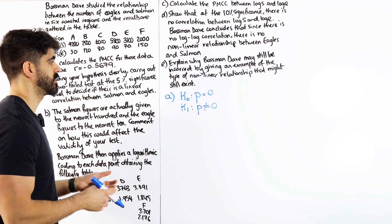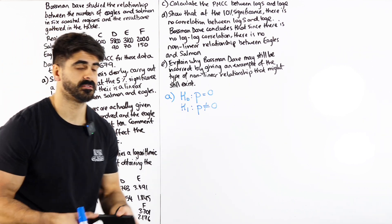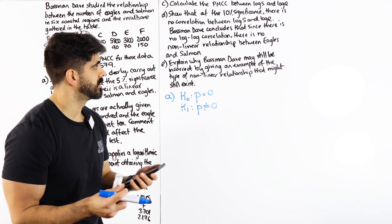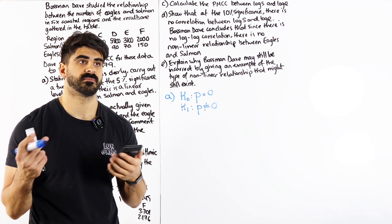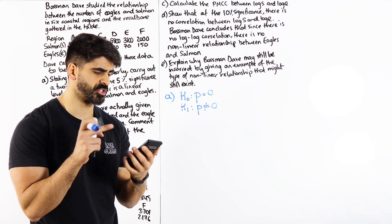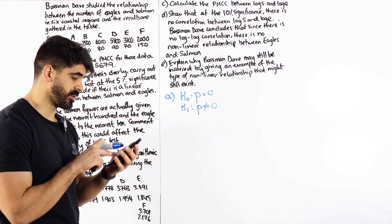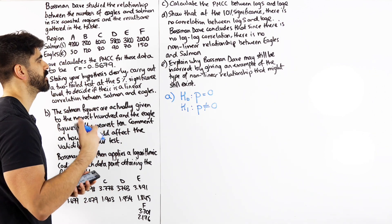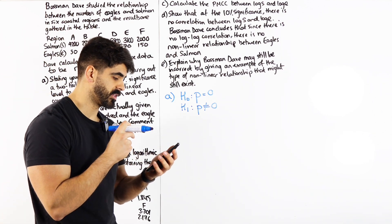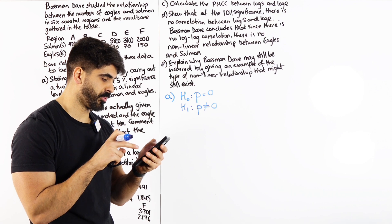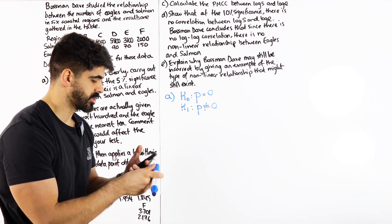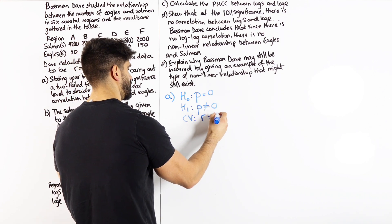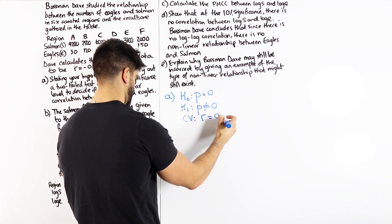My H1 is that P is not equal to 0 because we are testing if there is any linear correlation between the two values. Now, the next thing we do is we just go to our tables. Depending on which exam board you're doing, will determine which one you're looking at. I'm just looking at the Edexcel table. So I'm looking for a sample size of 6. And because we're testing at the 5%, I'm looking at the 2.5% on either side. And when I see that, I see 0.8114. So my critical value, CV, is R equals 0.8114.